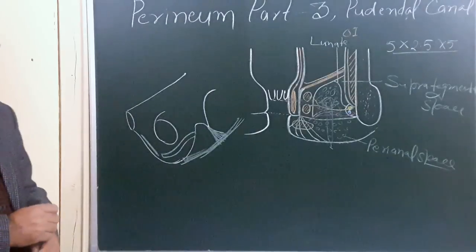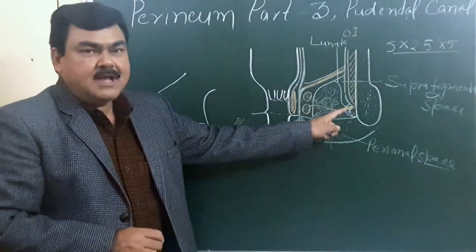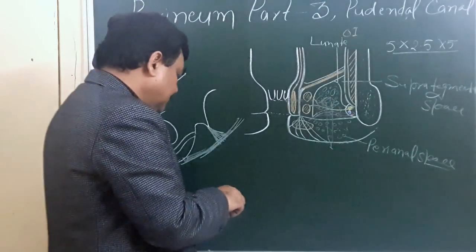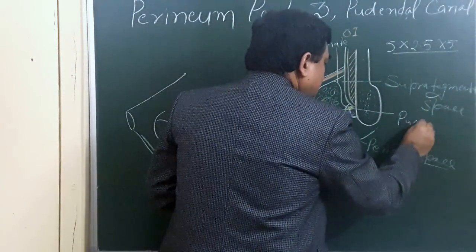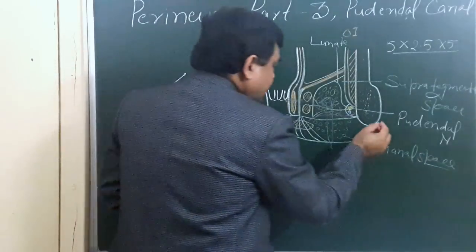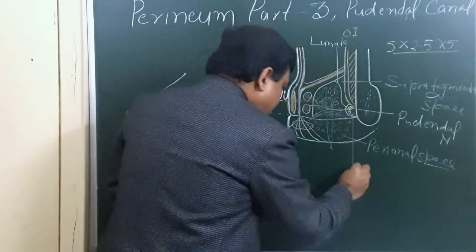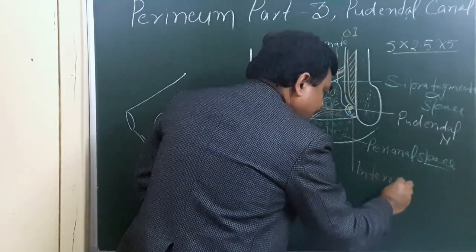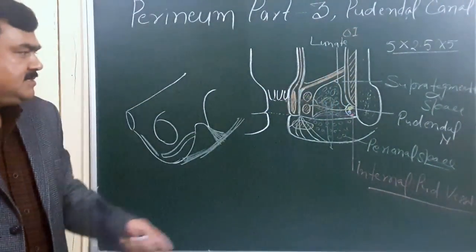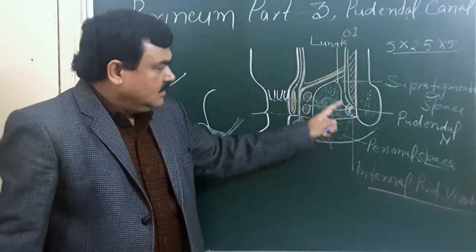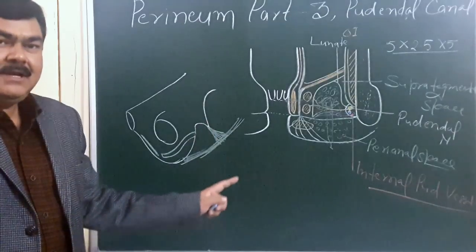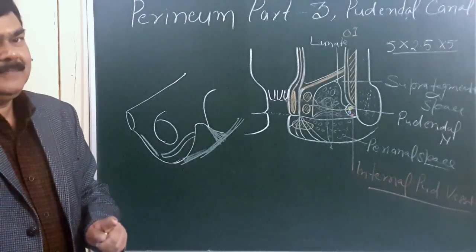Now, what are the contents of this pudendal canal? The pudendal canal contains three contents: the pudendal nerve, the internal pudendal artery, and the internal pudendal vein. We will now discuss each one.